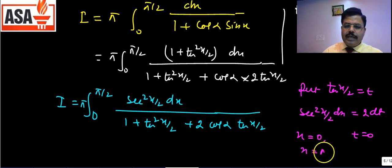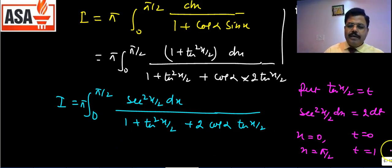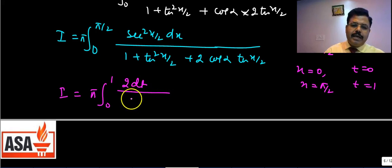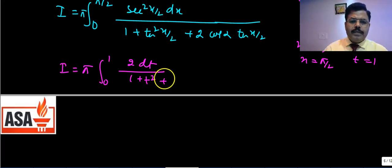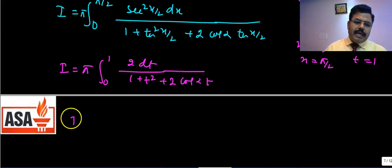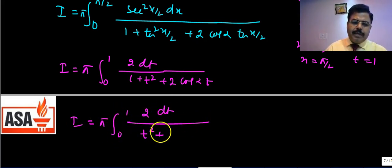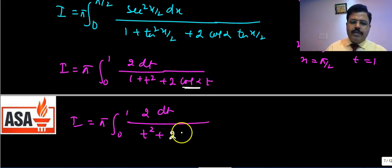Limit change: when x=0, t=0; when x=π/2, t=1. The integral becomes I = π·∫₀¹ 2dt/(1 + t² + 2cosα·t).